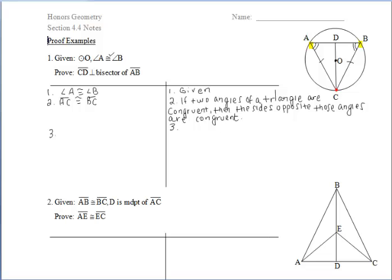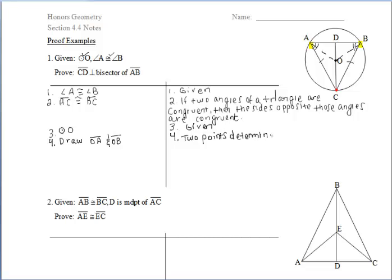We need one more point to also be equidistant from those two points, and that point has to lie on the same segment as point C. Since we're given circle O, we can work with some congruent radii. Let's draw in OA and OB — we can draw those two segments because two points determine a segment, and OA and OB are congruent because they're radii of the circle.